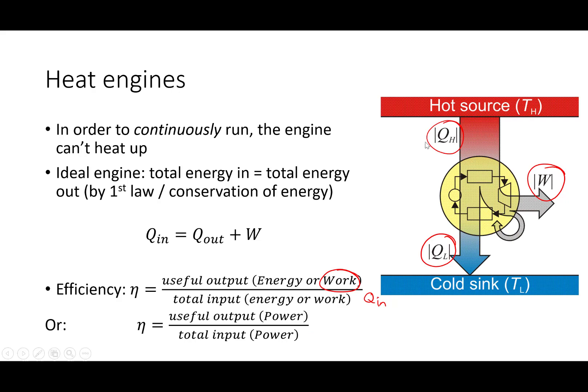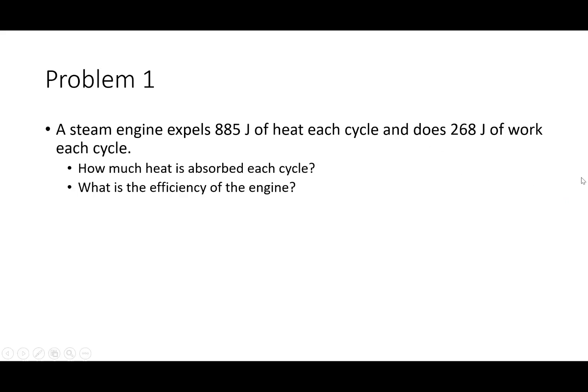So let's do a few practice problems. A steam engine expels 885 joules of heat each cycle and does 268 joules of work each cycle. How much heat is absorbed each cycle and what is the efficiency of the engine? So let's sketch out an energy diagram or a black box diagram or an engine diagram. So we know that some heat is going to come in, Q in. We know that some heat is going to go out, Q out. And we know that some work is also going to be output, W.